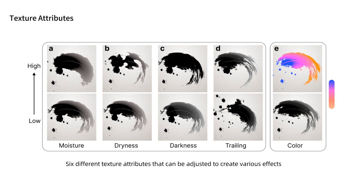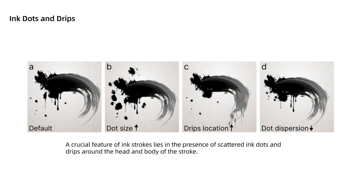Based on our discussions with ink painting artists, the appearance of an ink stroke is influenced by various factors, among which the most important ones include moisture level, dryness, darkness, trailing, and colour of the ink. Inkbrush allows users to adjust each of these factors to achieve their desired effects. Ink strokes feature unique ink dots and drips. We've included customisable options for users to adjust the quantity, size, and placement of these elements, ensuring flexibility. Experienced artists have set the default values to guarantee natural-looking results with minimal effort.